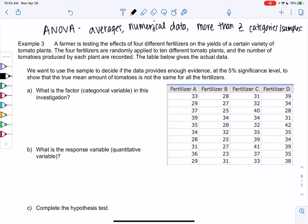Step one with hypothesis testing is really identifying which one should I be using. It's a little bit easier in the notes because everything's sorted by section. So really step one, decide what test to use. So a farmer is testing the effects of four different fertilizers. So there's my hint, four. So that's more than two. Four different fertilizers on the yields of a certain variety of tomato plants. So basically, how many tomatoes does it produce? The four fertilizers are randomly applied to ten different tomato plants. And the number of tomatoes produced by each plant are recorded. And I just put those in the data below.